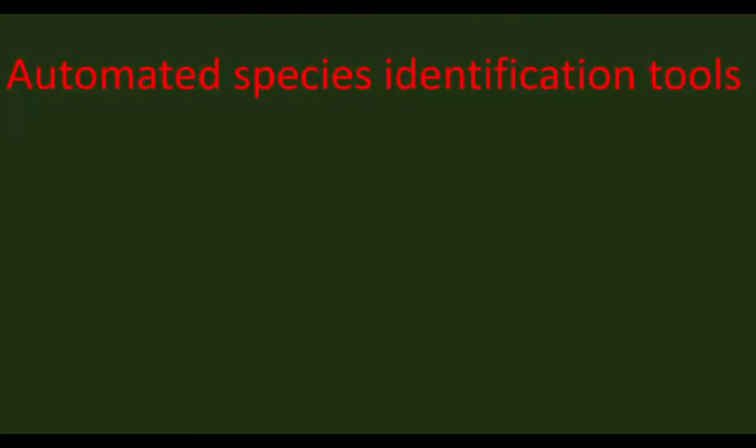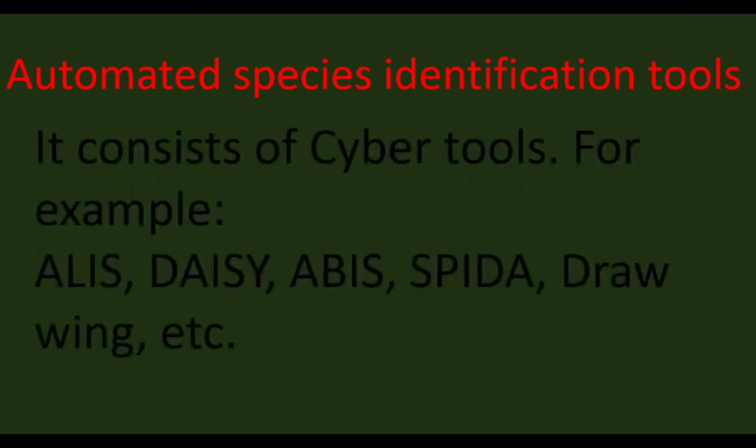Some taxonomical tools are called automated species identification tools. These tools can be handled by people who do not have extensive knowledge about taxonomy. They consist of cyber tools, for example ALICE, DAISY, ABYSS, SPIDER, DRAWWING, and others.